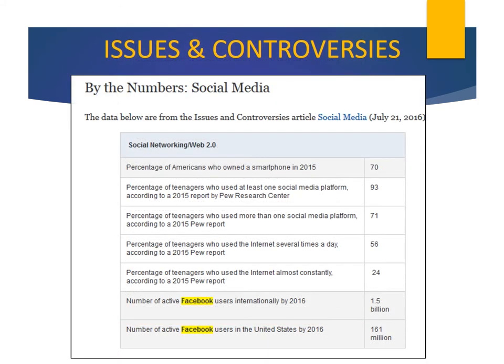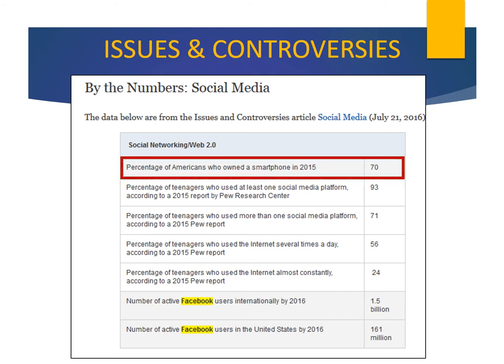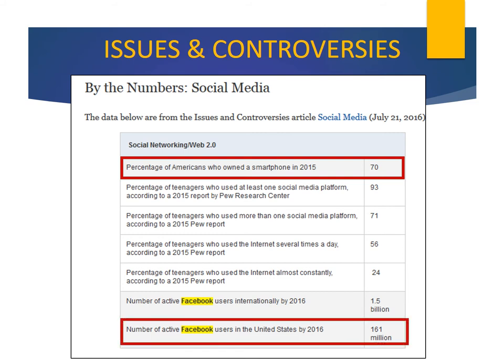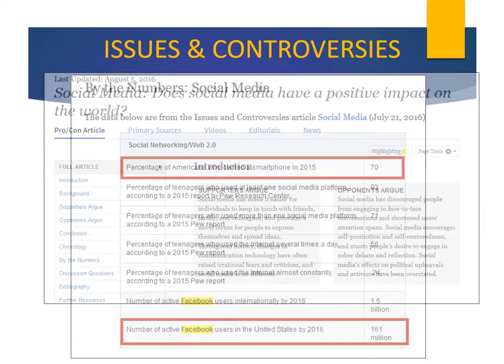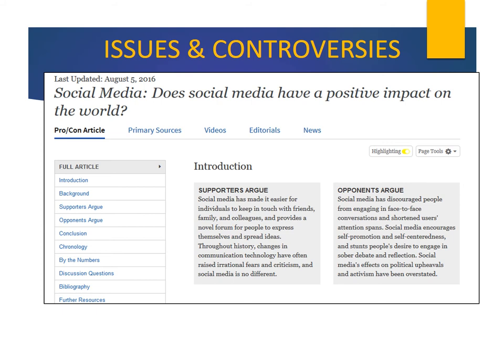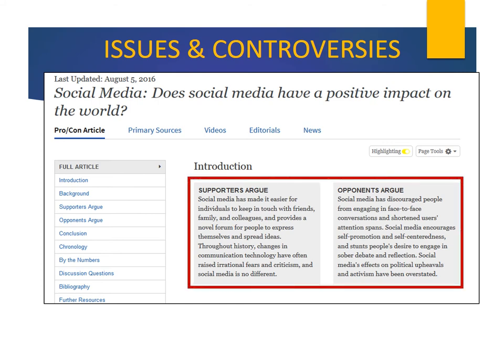Here is another sidebar called By the Numbers. It shows statistical snapshots of key issues related to social media. For example, 70% of Americans owned a smartphone in 2015, and there were 161 million active Facebook users in the United States by 2016. Let's return once more to the report on social media. Here is a nice feature of the Issues and Controversies database: a box that summarizes what supporters argue and what opponents argue.